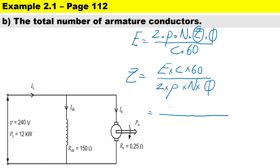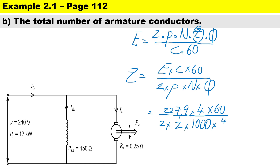The EMF is 227.9 volts. The number of parallel paths for a lap wound machine is 4 (since it equals 2 × pole pairs). Multiplying by 60 on top; on the bottom we have 2 (constant) × 2 pole pairs × 1000 RPM × (40/1000) weber. Therefore, the total number of armature conductors Z = 341.85 conductors.